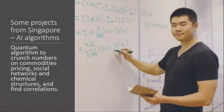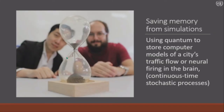So what are we doing in Singapore? Using quantum algorithms to crunch numbers on commodities pricing, social networks, chemical structures, and finding correlations — so that scientists will no longer need to use an entire wall to write their equations. Also using quantum to store computer models of a city's traffic flow or neural firing in the brain, as we are turning our whole nation into a smart city and smart nation, and we need to store a lot of data.